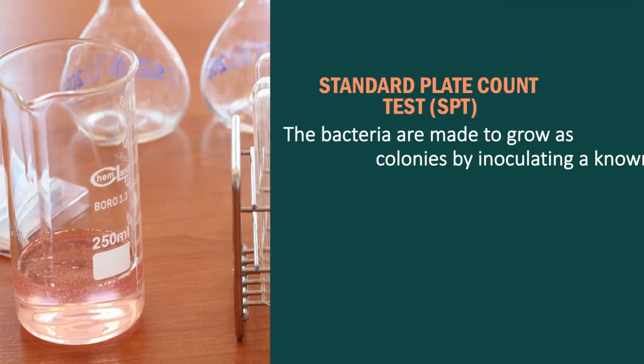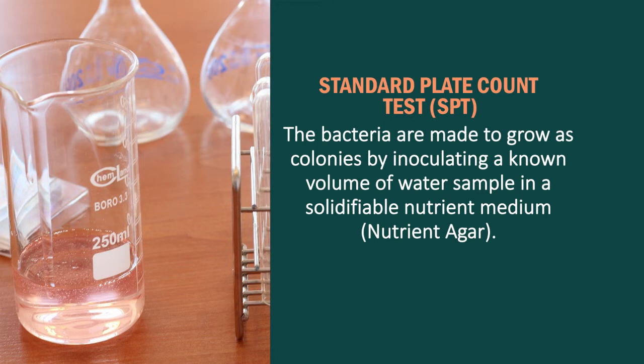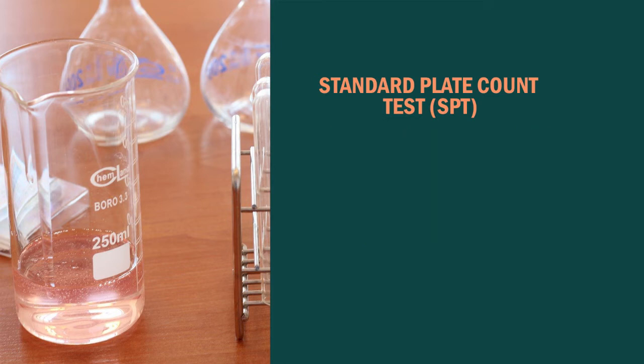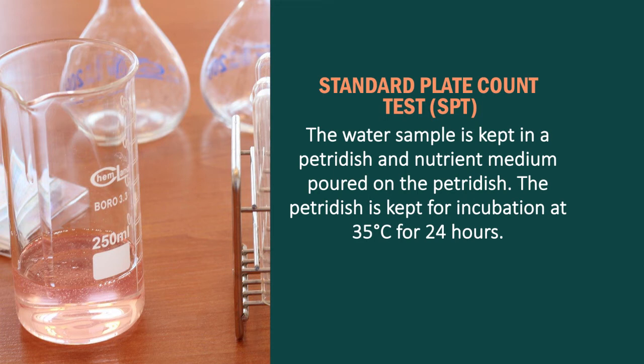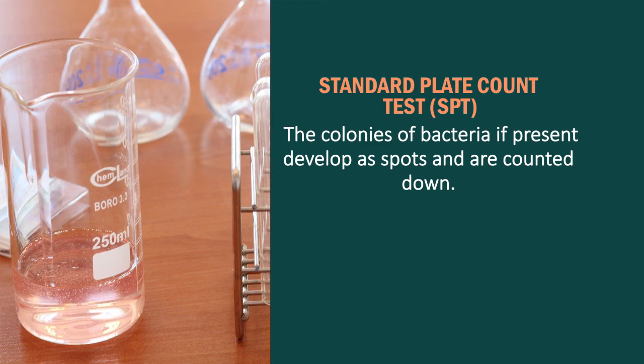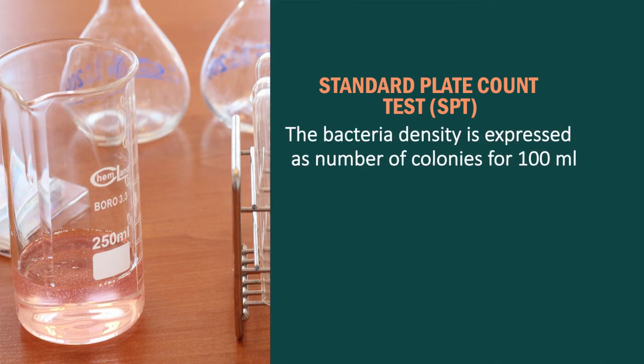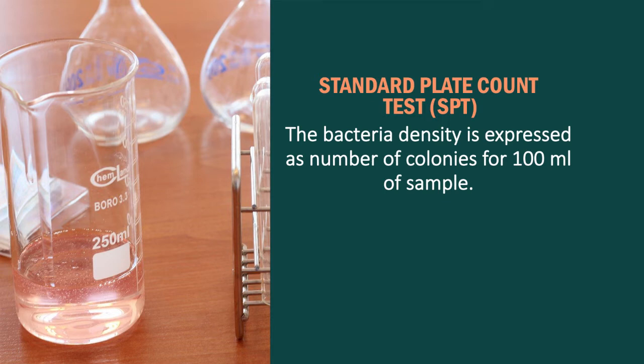Standard plate count test: the bacteria are made to grow as colonies by inoculating a known volume of water sample in a solid nutrient medium. The water sample is kept in a petri dish and nutrient medium is poured onto the petri dish. The petri dish is kept for incubation at 35 degrees centigrade for 24 hours. The colonies of bacteria, if present, develop as spots and are counted. The bacteria density is expressed as number of colonies per 100 ml of sample.